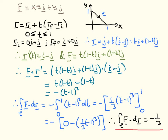We can rewrite F in terms of x and y, since x=t and y=1−t. So x·y gives t(1−t), and y is (1−t). Now we take the scalar product of F with r': dotting these together, we have t(1−t) times 1 plus (1−t) times (−1). The factor (1−t) is common, giving (1−t)(t−1), which we write as −(t−1)².